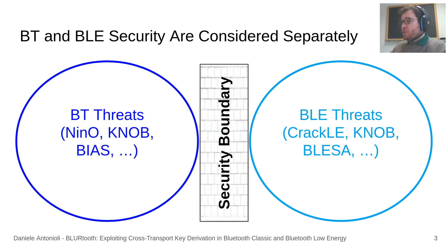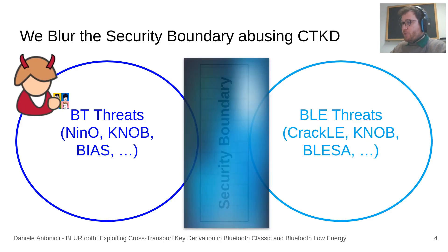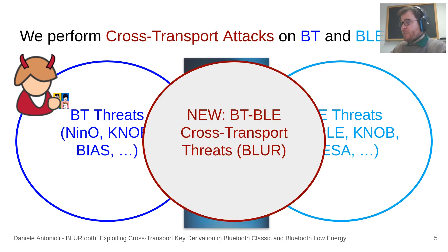The Bluetooth standard and the research community considers BT and BLE security separately, as if they were two non-intersecting sets separated by a clear security boundary. For example, in the BT threat set we have our recent work on key negotiation and impersonation attacks, codename KNOB and BIAS attacks, while in the BLE set we have BLE threats including key negotiation attacks. In this work, we uncover and empirically confirm that an attacker can blur the security boundary between BT and BLE by abusing a feature called cross-transport key derivation, or CTKD in short, and perform impactful cross-transport attacks.